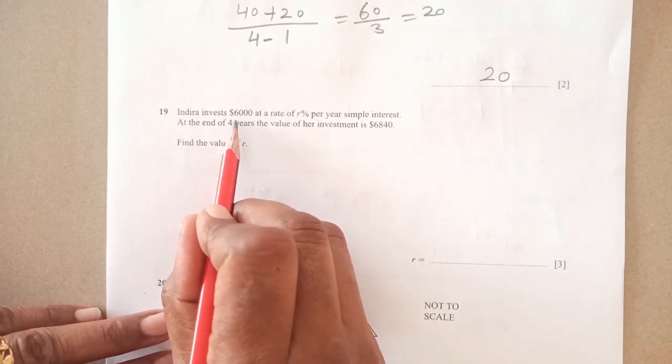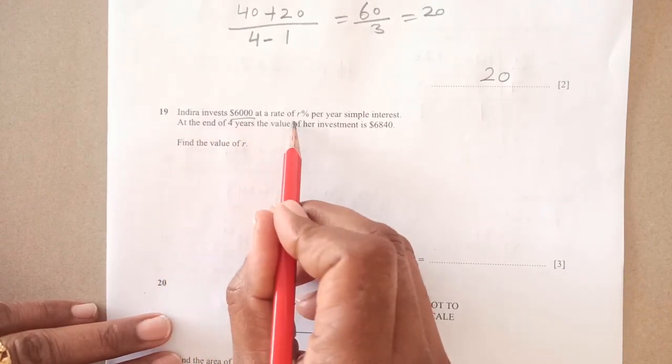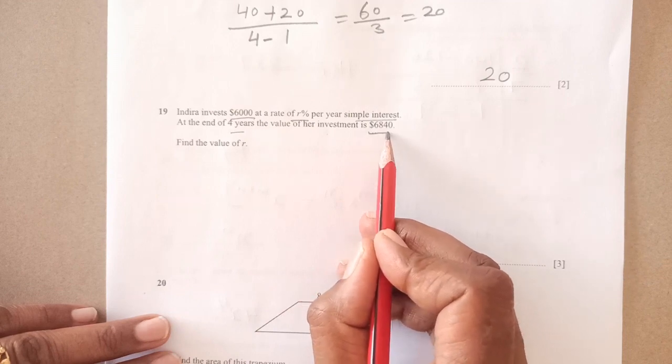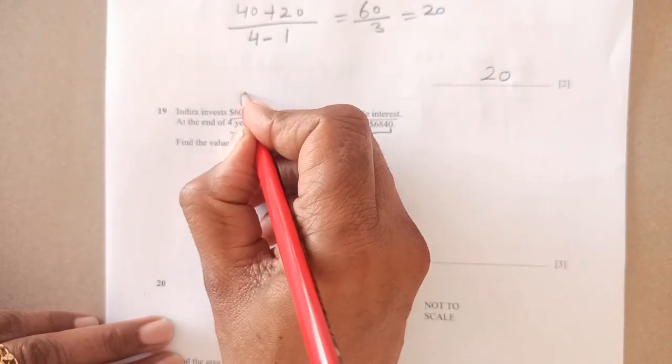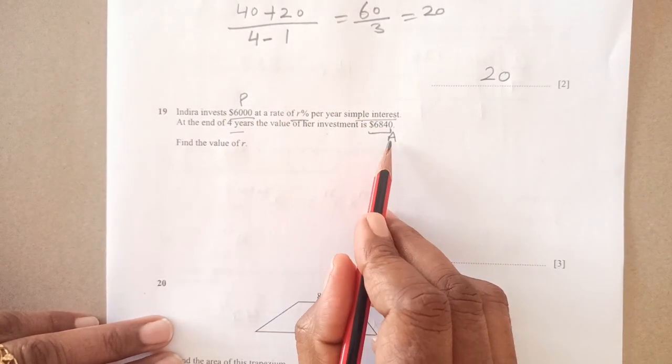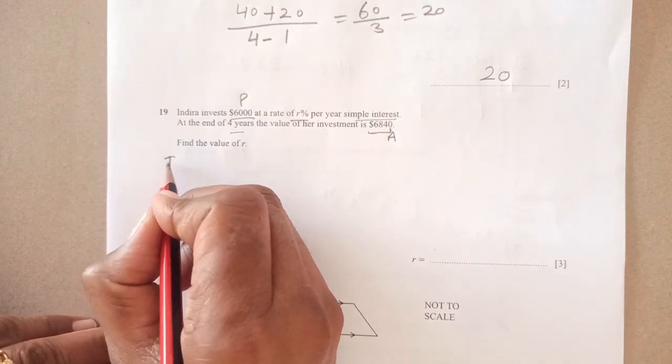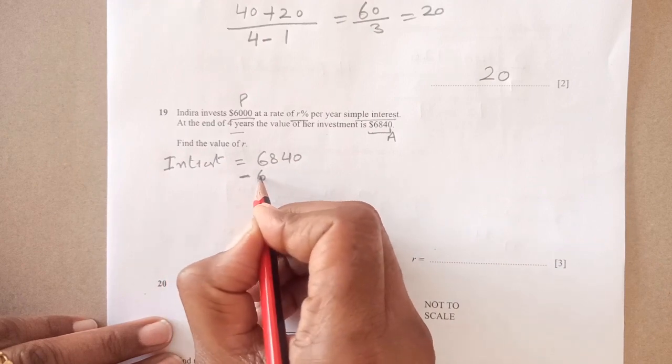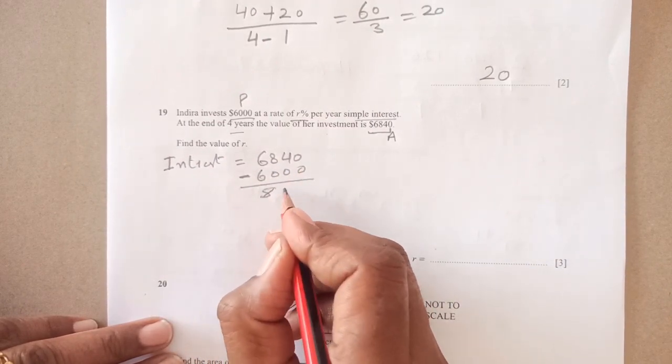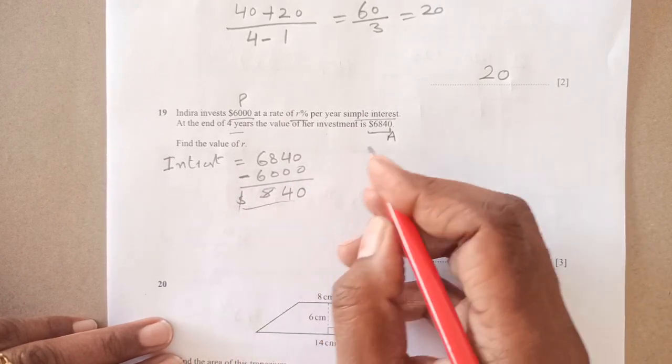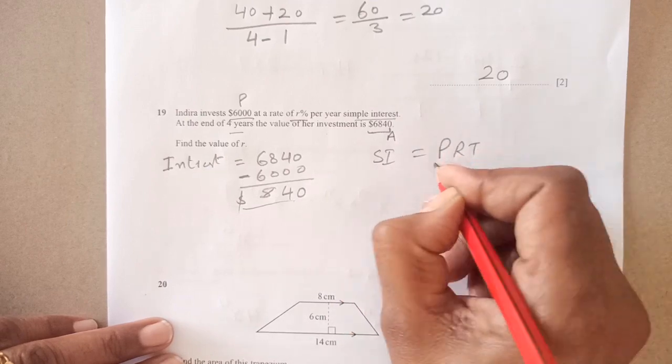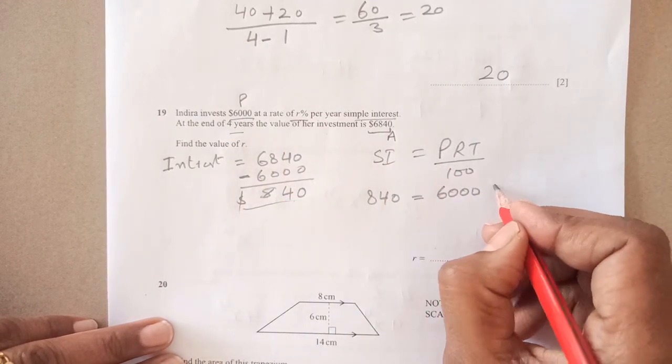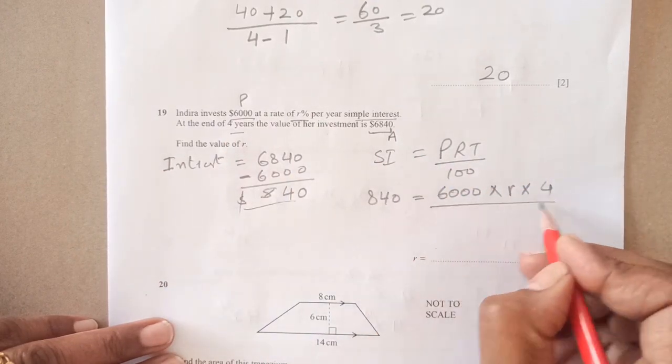Indira invests $6000 at rate of r percent per year simple interest. At the end of 4 years, the value of investment is $6840. Find the value of r. This is the principal amount and this is amount after interest is added. So the interest is 6840 minus 6000, which is $840. The formula for simple interest is PRT over 100.